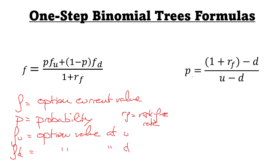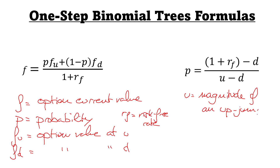Looking at the other formula to calculate the probability: we have one plus the risk-free rate minus d, over u minus d. Here, u is the magnitude of an up jump, and d is the magnitude of a down jump.